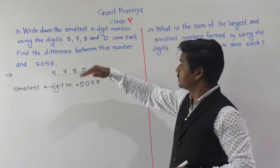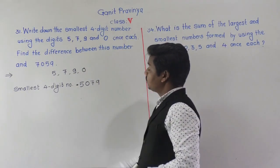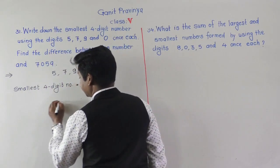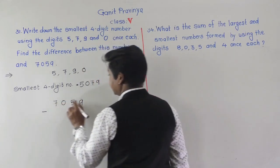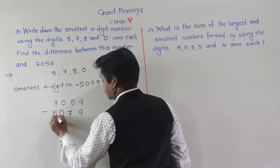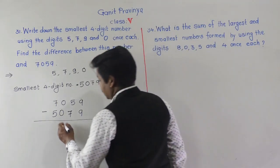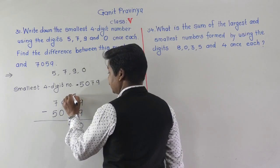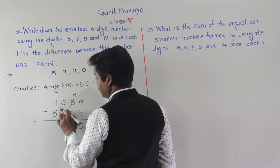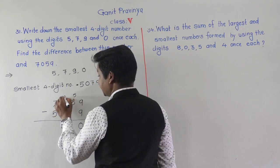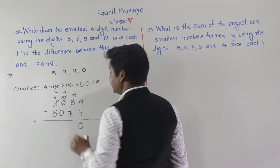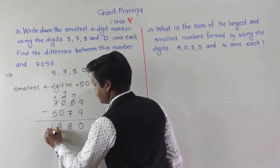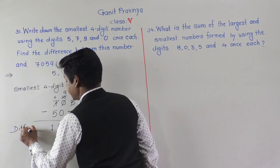Now find the difference between this number and 7059. Since 7059 is greater, we write it on top and subtract 5079 from it. Working through the borrowing: 9 minus 9 is 0, 15 minus 7 is 8, then borrowing from 7 gives us 9 minus 0 is 9, and 6 minus 5 is 1. So the difference is 1980.